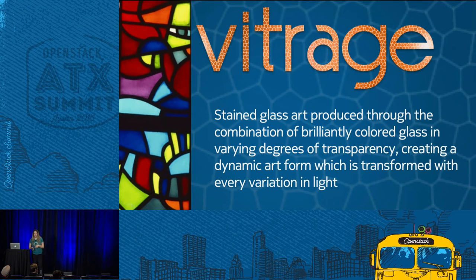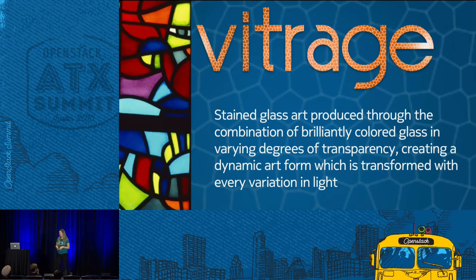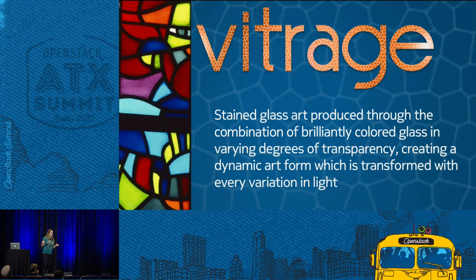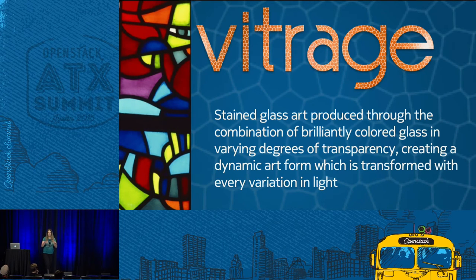I've been getting a lot of questions about what the word 'vitrage' actually means. Vitrage is the French word for stained glass window. When you think about a stained glass window, you think about a lot of pieces of colored glass — when you look at them separately they don't mean anything, but when you put them all together you get this beautiful picture. That's really the essence of Vitrage: gathering a lot of bits of information from lots of data sources, putting them together, and giving you a window — an actual vision and insight — into your system.